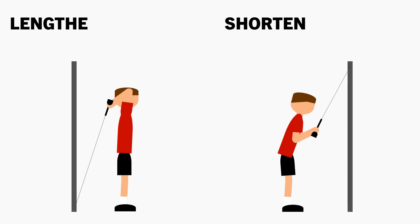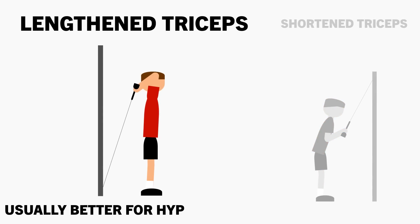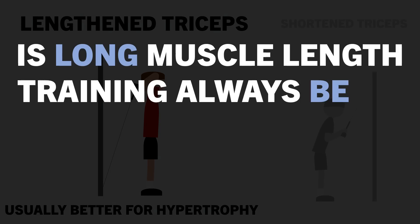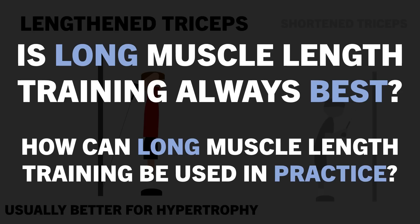We can train a muscle at different lengths with the exercises and technique used. In general, it seems that training a muscle in a more stretched position appears to be favorable for muscle growth. But is training a muscle at longer lengths always better? And if so, how can we implement long muscle length training in our lifting routines?